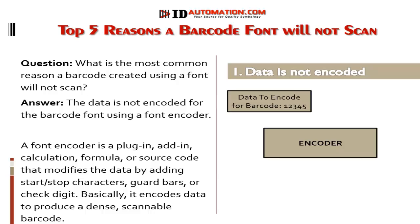A font encoder is a plugin, add-in, calculation, formula, or source code that modifies the data by adding start-stop characters, guard bars, or a check digit. Basically, it encodes the data to produce a dense, scannable barcode. Let's take a look at how this works.